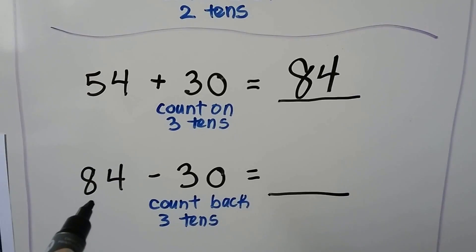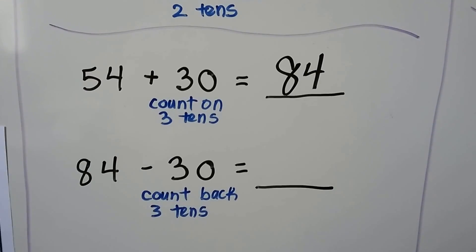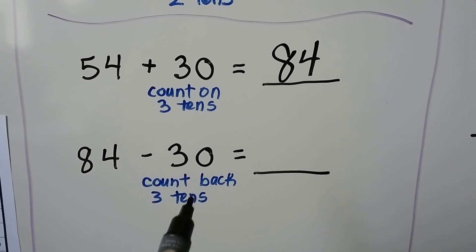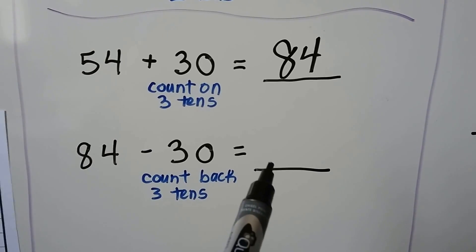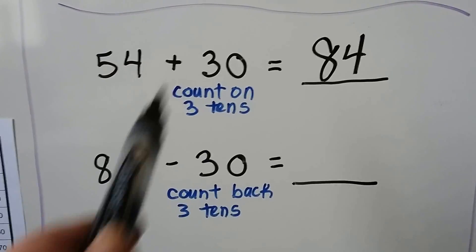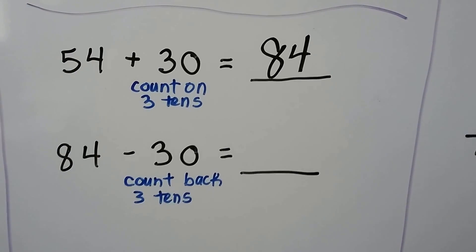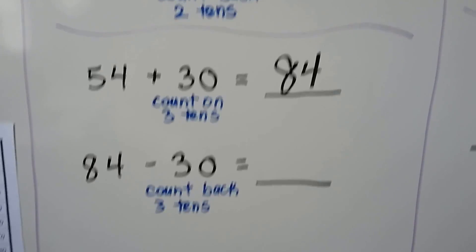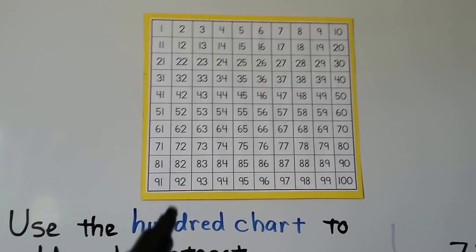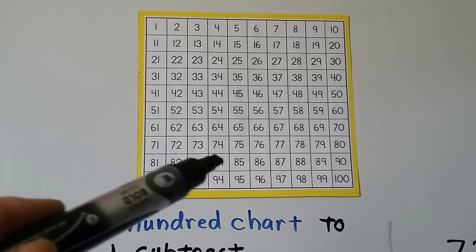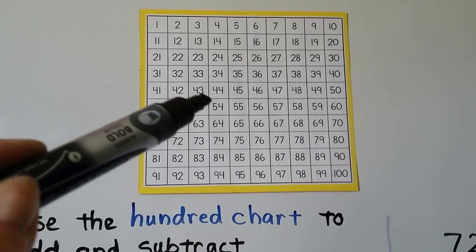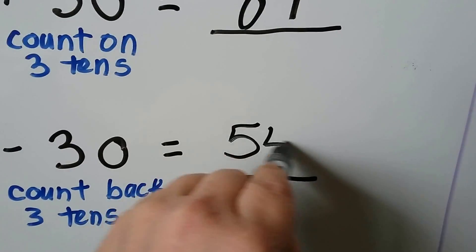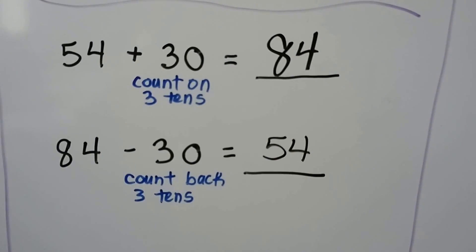We can do a related subtraction sentence: 84 minus 30. We would count back starting at 84, three tens back. Knowing that these are related number sentences, we start at 84 and count back three tens: 74, 64, 54. The answer is 54 — the same number as the addend in the addition sentence.